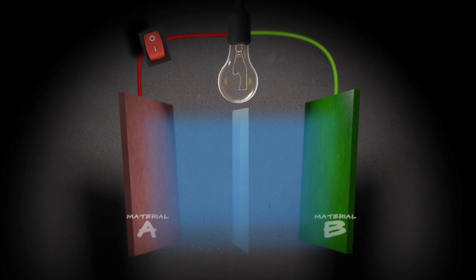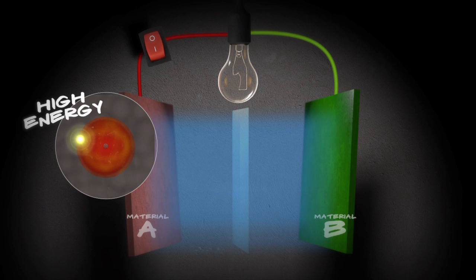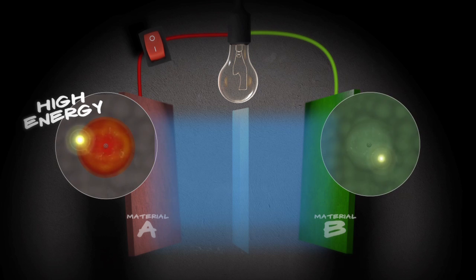With the circuit off, electrons in material A are stuck in their high energy, high stress atoms. Out of reach and on the other side of this electron barrier are material B atoms, which would offer an easy, cushy, low energy level position. Let's turn the circuit on.